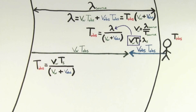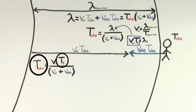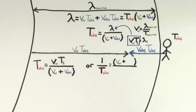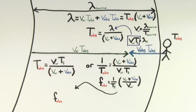This is a valid equation to find the observed period, but physicists prefer talking about frequency more than period. So we can convert this statement about periods into one about frequencies by inverting both sides. We get one over the observed period equals the speed of the wave plus the speed of the observer divided by the speed of the wave times the period of the source. But one over the observed period is just the frequency experienced by the observer. Pulling out a factor of one over the period of the source, we get the velocity of the wave plus the velocity of the observer divided by the velocity of the wave, times the frequency of the source.